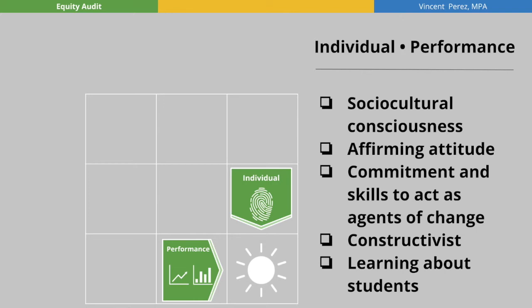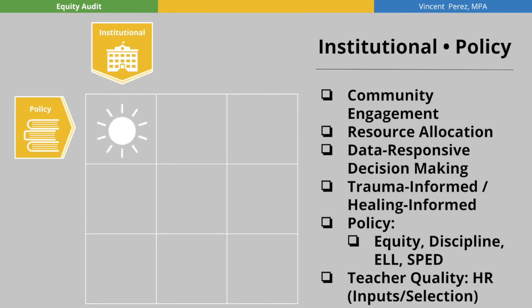Let's jump to another. Let us consider the institutional policy whereby we set forth the framework for engaging our communities, allocating resources, and making decisions based on data. Is your school trauma-informed or healing-informed? Combing through policy such as your equity, discipline, ELL, and special education policies is also an important part of this area. Teacher quality, including the selection of your teacher base, is critical to examine.